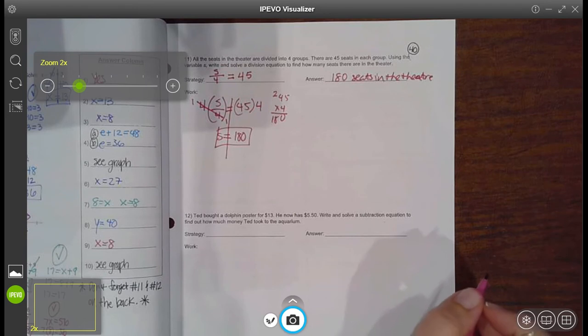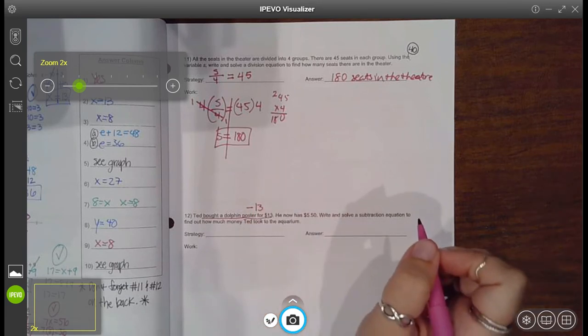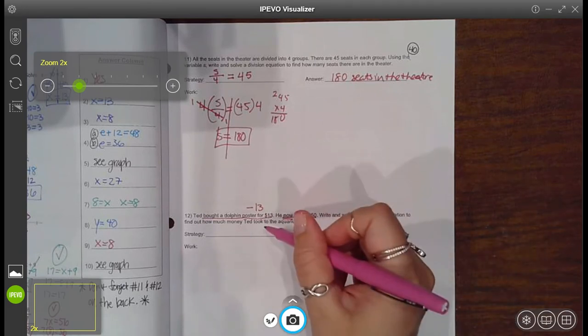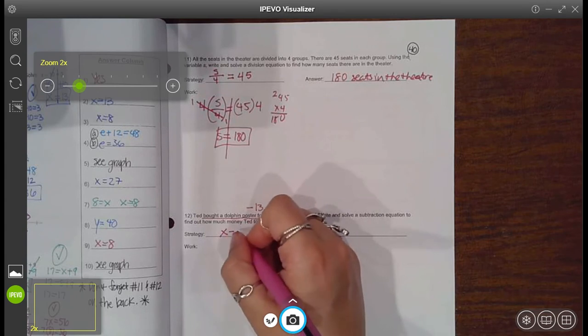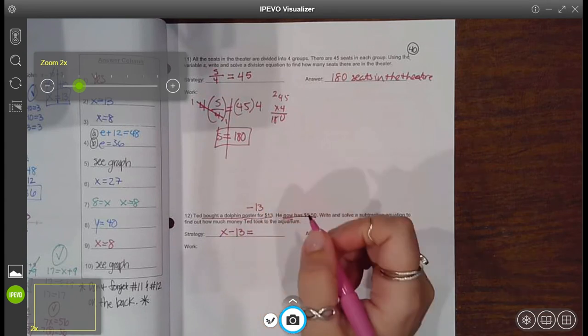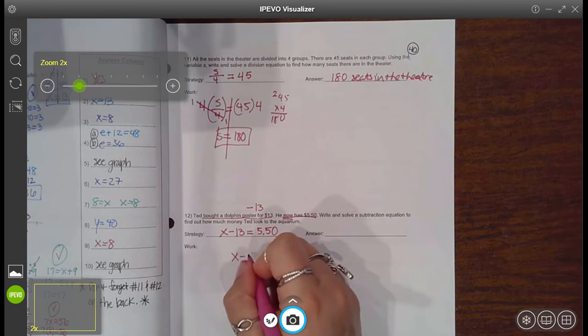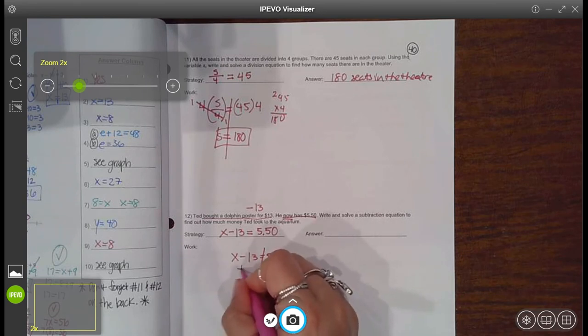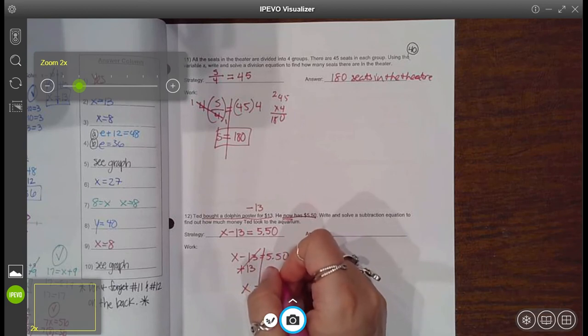For the next one, it says Ted bought a dolphin poster. So when you buy something that's spending money and it was 13 bucks, he now has $5.50. And solve a subtraction equation to find out how much money he took with him to the aquarium. So we took some amount of money. We don't know how much that was. And then I bought something for 13 bucks. Now I have $5.50. There's my equation. And then to solve it, the inverse of subtracting is to add 13. Now those cancel. 13 minus 13 is zero. I got x by itself because x plus zero is just x. But whatever you do to one side, you have to do to the other.